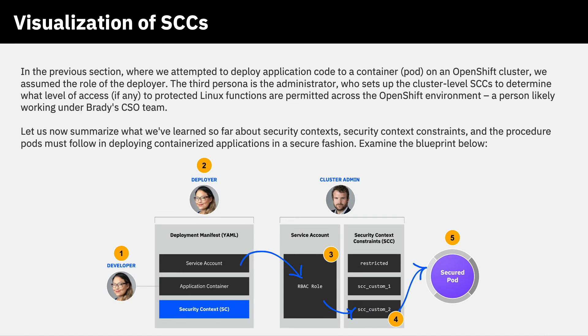In the previous section, where we attempted to deploy application code to a container on Red Hat OpenShift, we assumed the role of the deployer. A third person, the administrator, is the person who sets up the cluster-level SCCs that determine what level of access, if any, to protected Linux functions and permissions that we can make to the OpenShift cluster environment. In other words, in that section, as a deployer, we were making requests to that third person, the administrator — someone from Brady's team — on what permissions we can have access to.